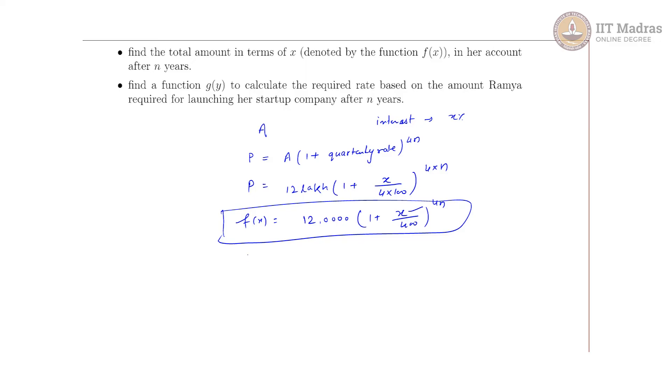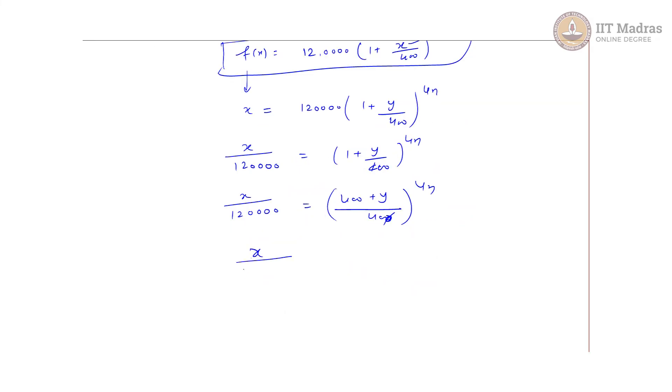How to calculate the inverse function? We put f(x) = x, so x = 12 lakh times (1 + y/400)^(4n). We replace x by some random variable y. So x divided by 12 lakh to the power 1/(4n) = 1 + y/400. So y will be 400 multiplied with (x/12 lakh)^(1/4n) minus 400.